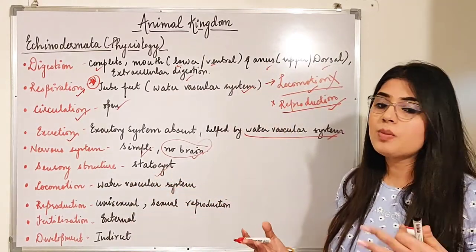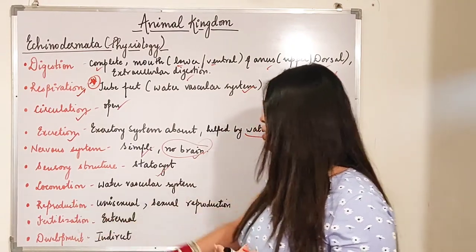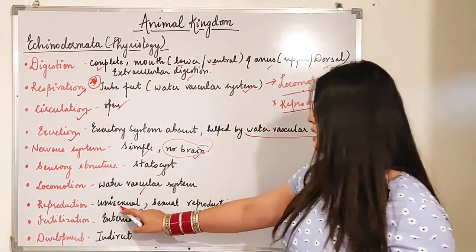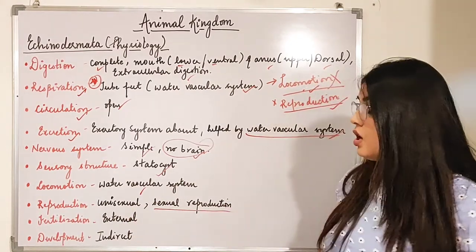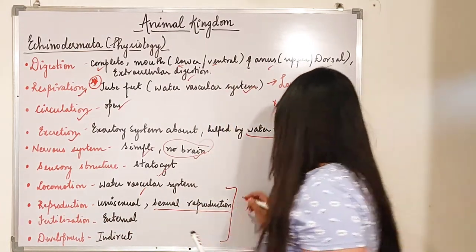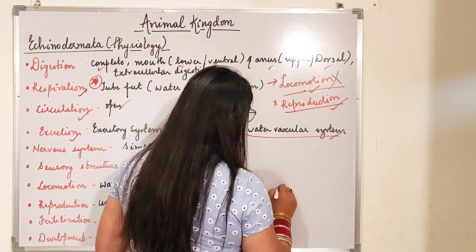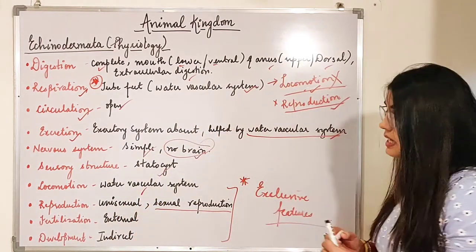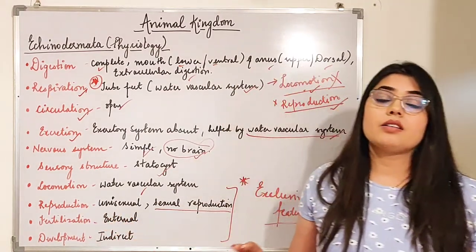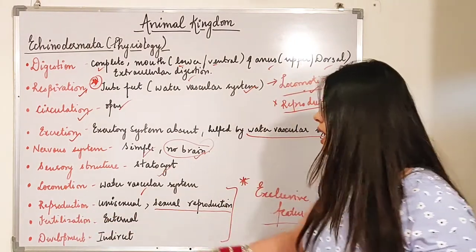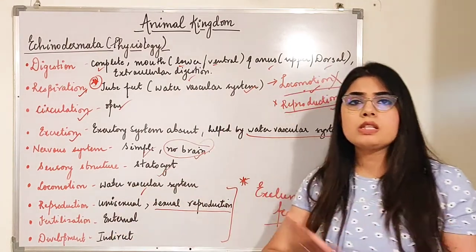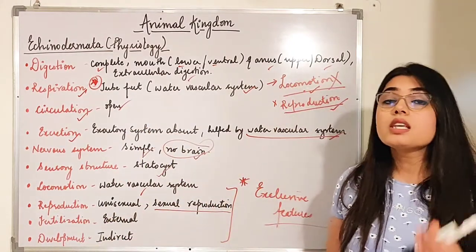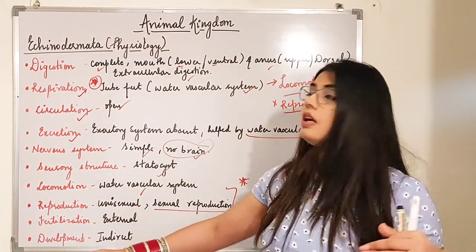The sensory structure is the statocyst, which is used as a balancing organ. Locomotion is done by the water vascular system. Reproduction can be unisexual and sexual reproduction also takes place. These three are exclusive features for echinoderms only: reproduction is unisexual/sexual, fertilization is external, and development is indirect.